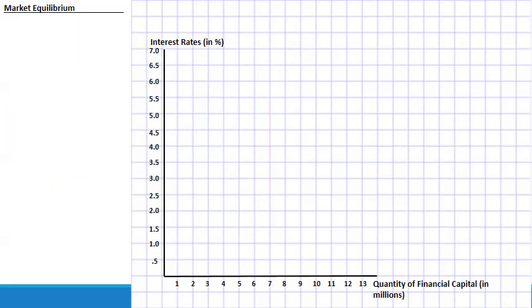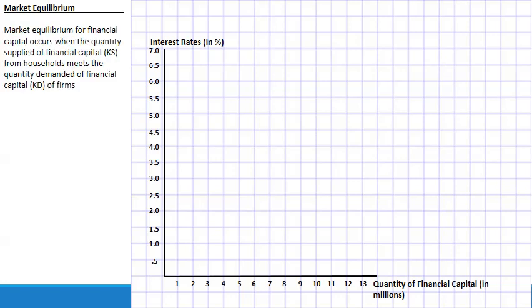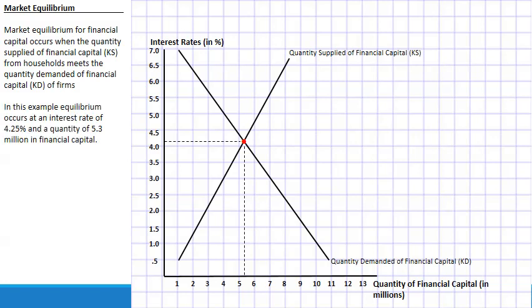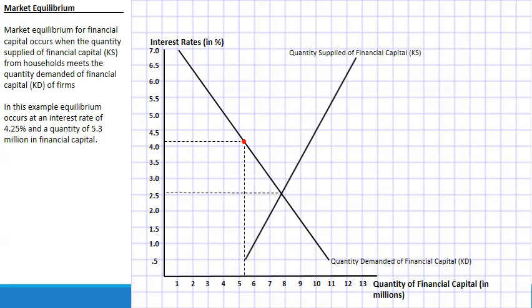Market equilibrium for financial capital occurs where quantity supplied (KS) and quantity demanded (KD) intersect. In this example, equilibrium is at approximately 4.25% interest rate and 5.3 million in financial capital. If supply were to shift right — say due to a population increase — the interest rate on financial capital would fall while the quantity of financial capital increases.